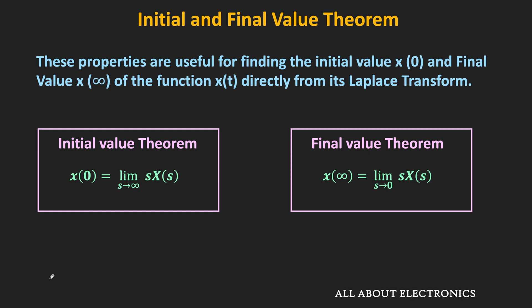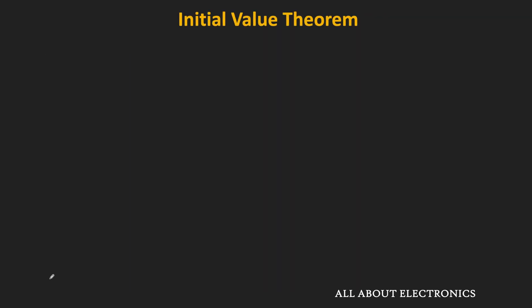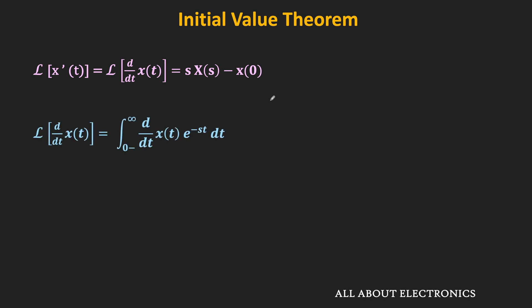Let us now see the proof of the initial value theorem. We have seen previously that the Laplace transform of dx/dt can be given as s·X(s) − x(0). And as per the definition of the Laplace transform, the Laplace transform of dx/dt can also be written as the integral from 0 to infinity of (dx/dt)·e^(−st) dt. Now, as s tends to infinity, the value of this exponential term becomes 0, meaning the Laplace transform of dx/dt will become 0.